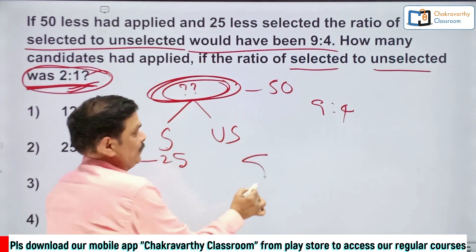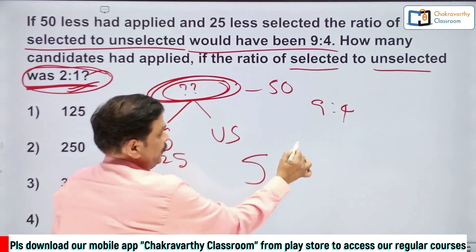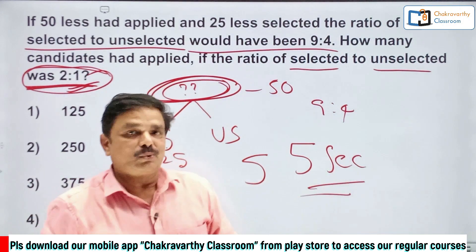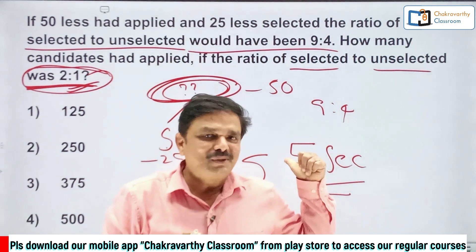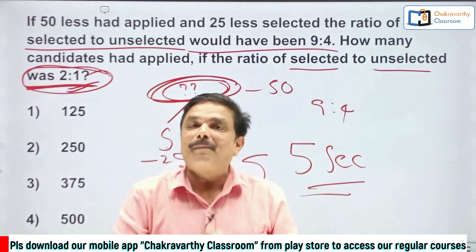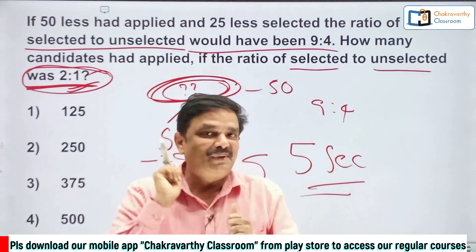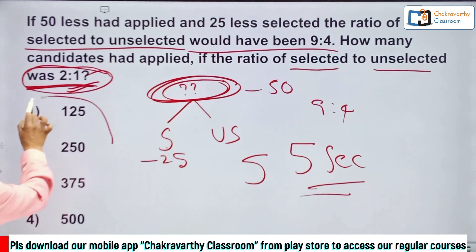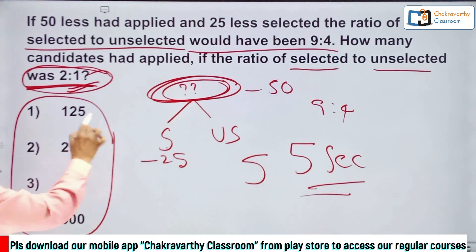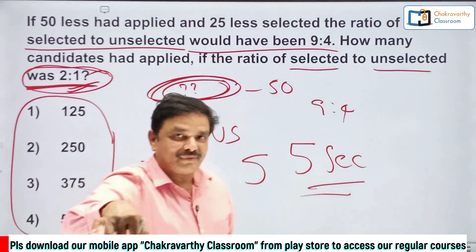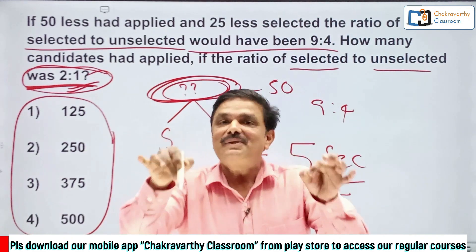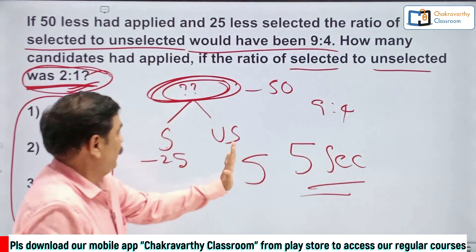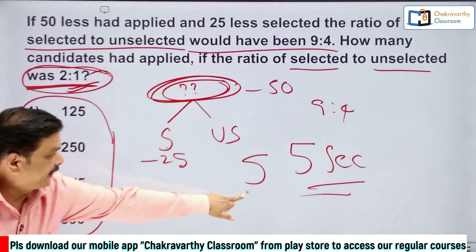How can you solve this question within 5 seconds? With the help of the options, you can do it within 5 seconds. But there are some limitations for that method. So first, let me explain the 5-second shortcut, and after that we'll go for the regular method.